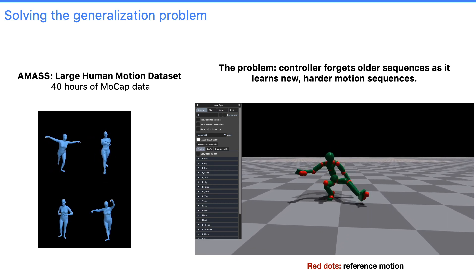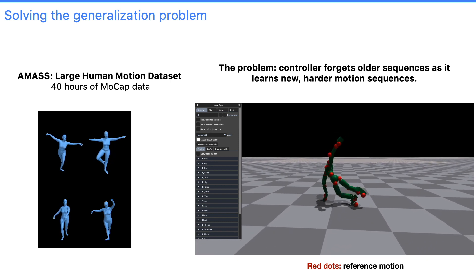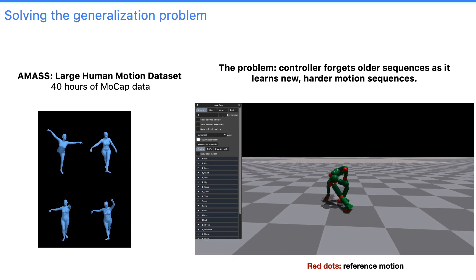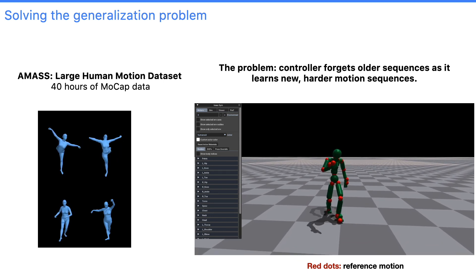But when we train a motion imitator on this, we notice that learning all of these sequences at once has a catastrophic forgetting problem. The policy will learn to cartwheel and then forget about backflipping.